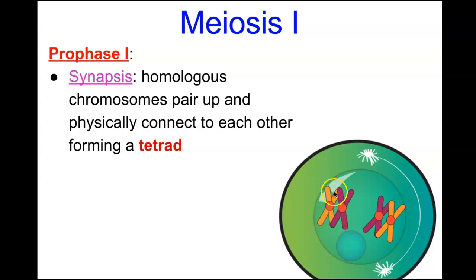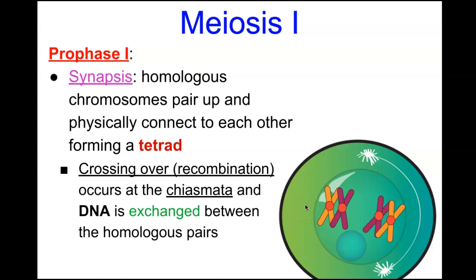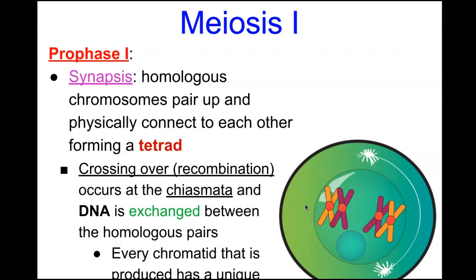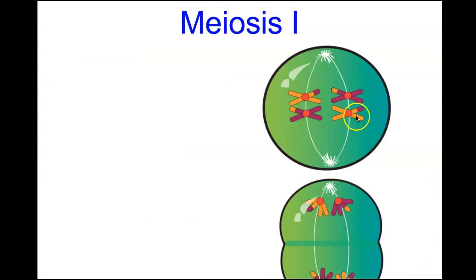A tetrad consists of four chromatids — numbered one through four — all lined up along the synapsis. When crossing over takes place, this genetic recombination occurs at points called chiasmata, where DNA is exchanged between the homologous chromosome pairs. Every chromatid produced now has a unique combination of DNA.